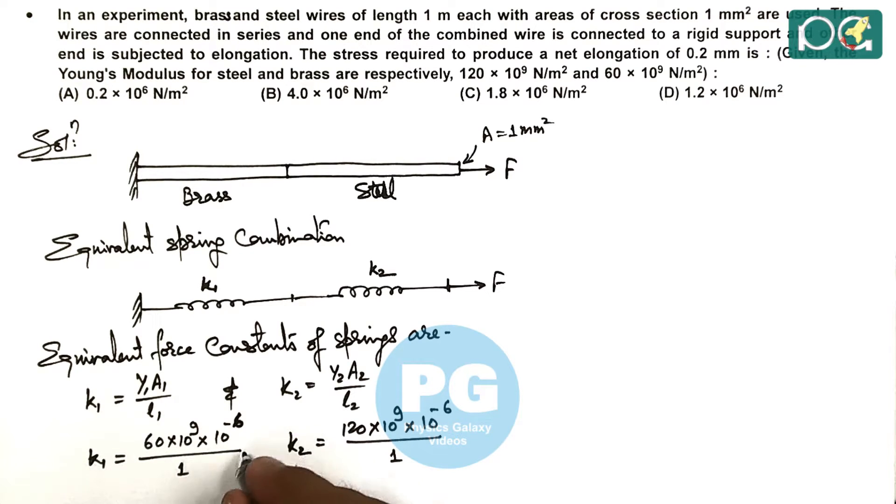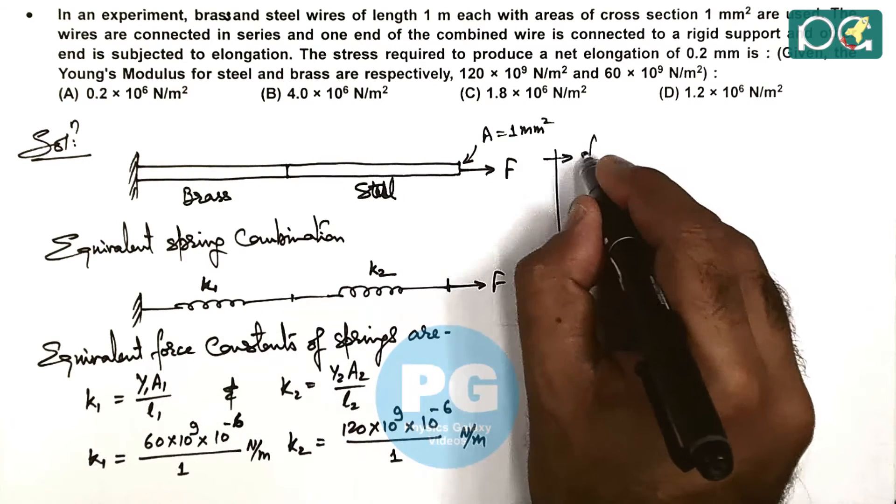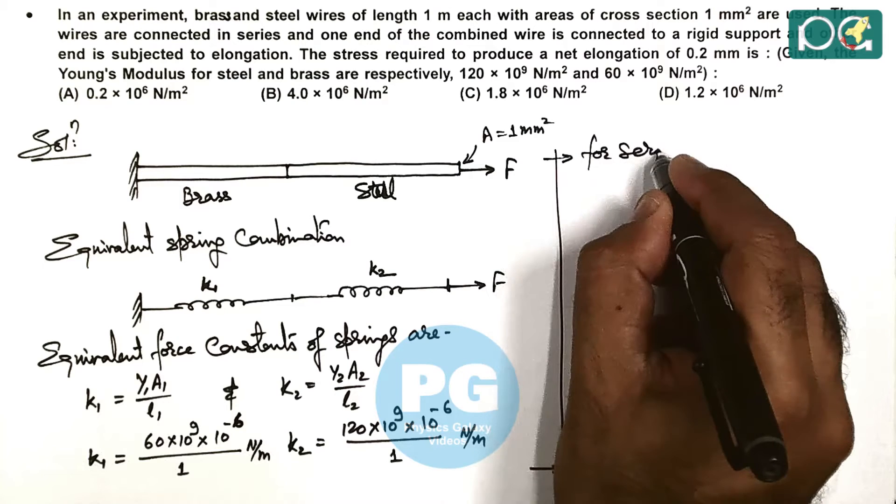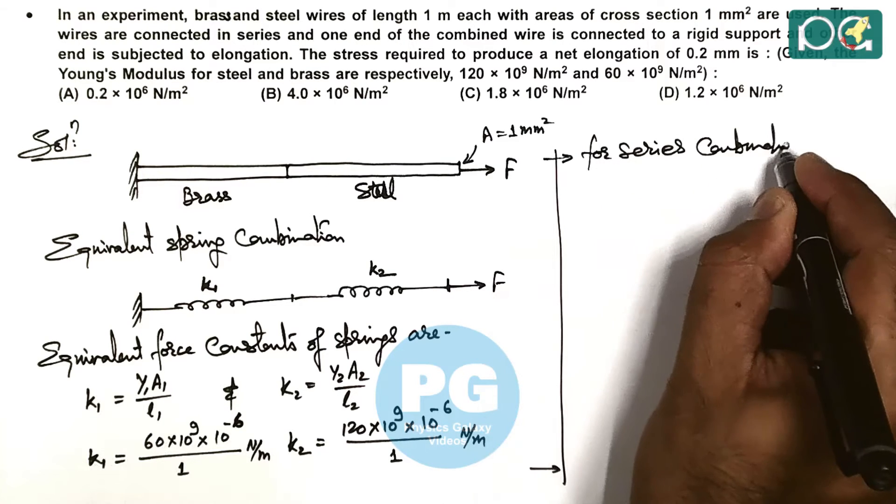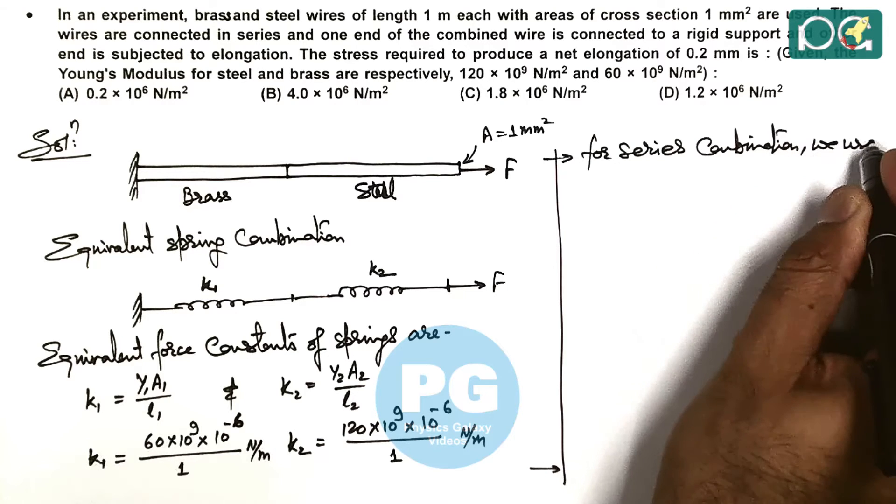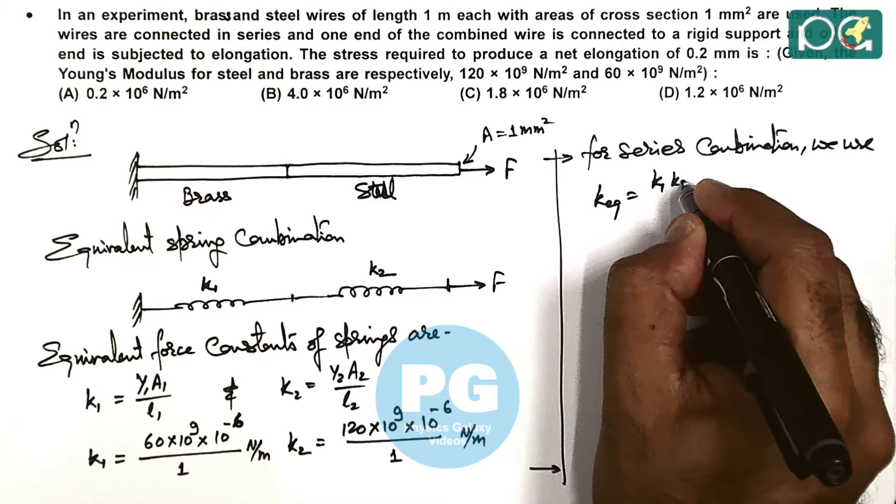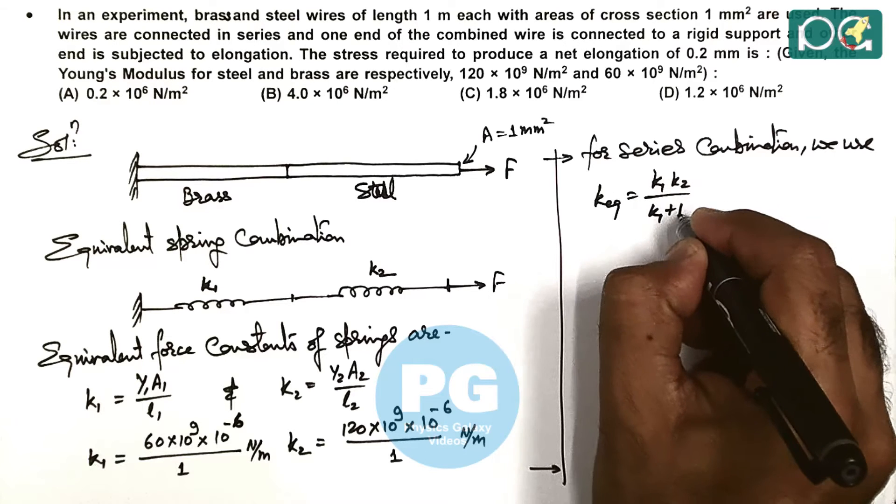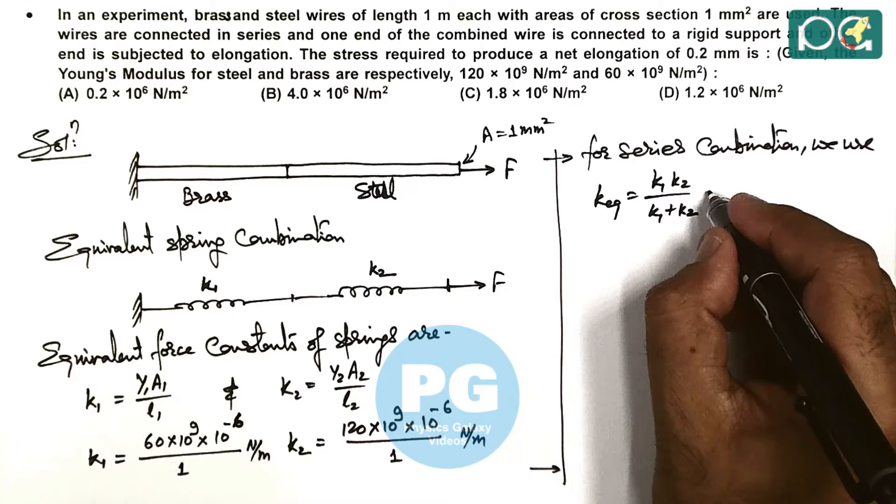Here we can write that the two springs are considered in series. So we can write for series combination: K_equivalent = K1×K2/(K1+K2). So we substitute the values.